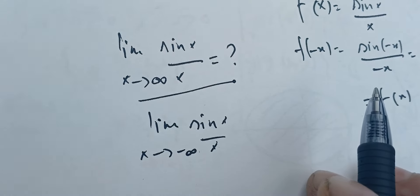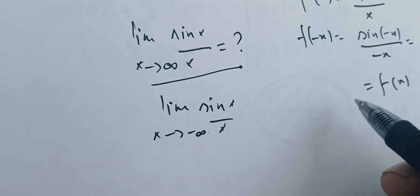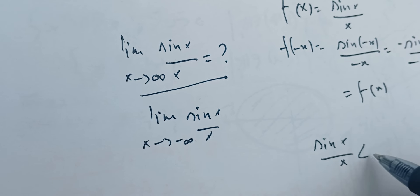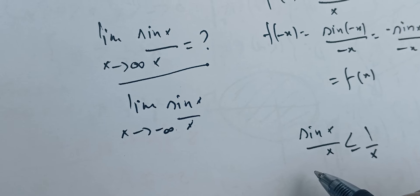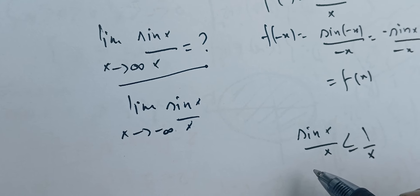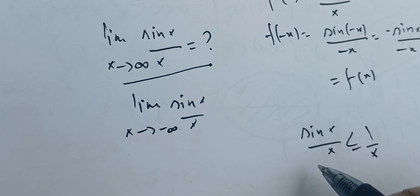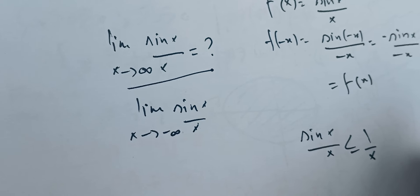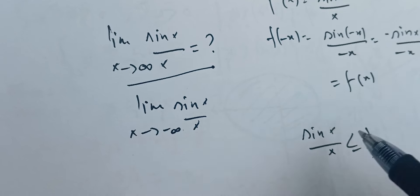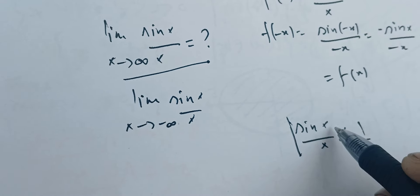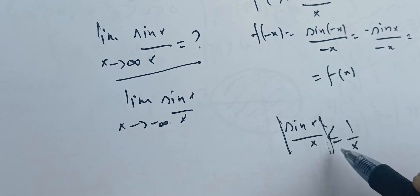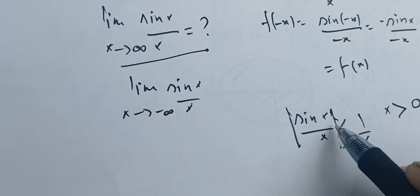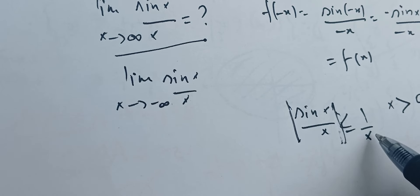One quick idea we can use is that we know the absolute value of sine of X over X is less than one over X, for both X positive and negative, or we can write it in absolute value. For X greater than zero, sine of X over X is less than one over X.